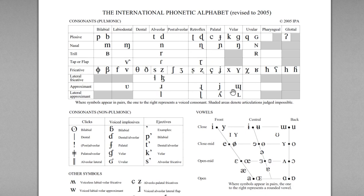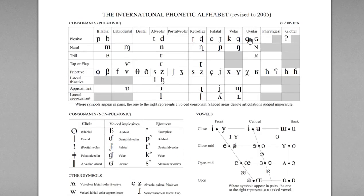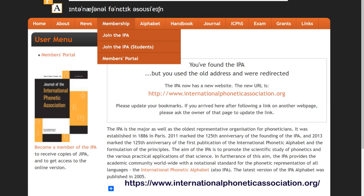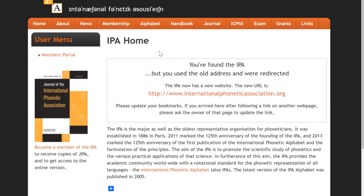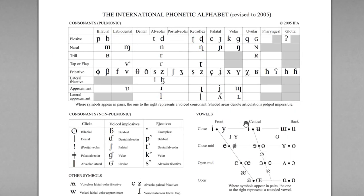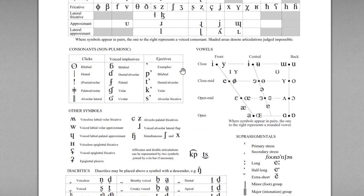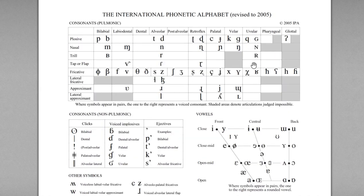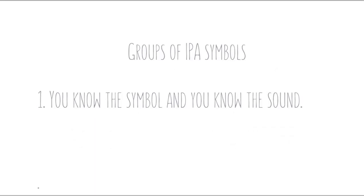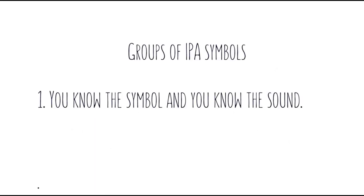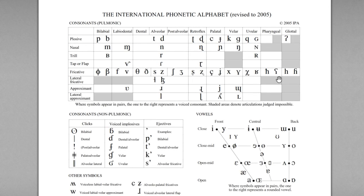The IPA chart is a one-page PDF file released by the International Phonetic Association — so even the organization's abbreviation is IPA, the same as International Phonetic Alphabet. This chart presents characters with brief descriptions and symbols. It's text-based, so when you look at these symbols you need to understand what they are. Crucially, these symbols represent sounds — they are not sounds themselves.